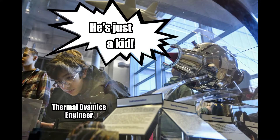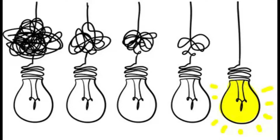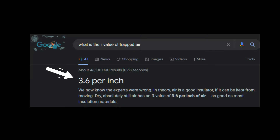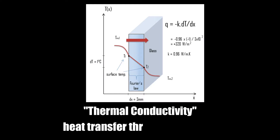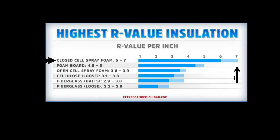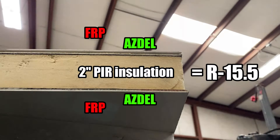Now you're beginning to know why thermodynamic engineers get paid the big bucks. Let's see if I can simplify it. Basically, insulation is trapping air, because air is a good insulator at R3.6 per inch — Google it. Thermal conductivity also plays a role with those materials, as well as solids such as extrusions, pultrusions, and laminates. Add all these factors up and you have your R-value. When adding up all of these values of the materials of a Globe Trucker panel, the theoretical R-value is 15.5.